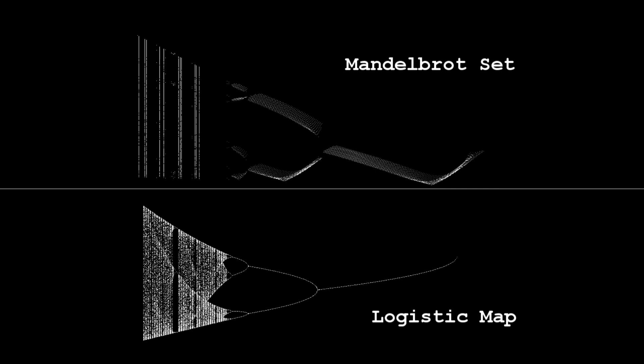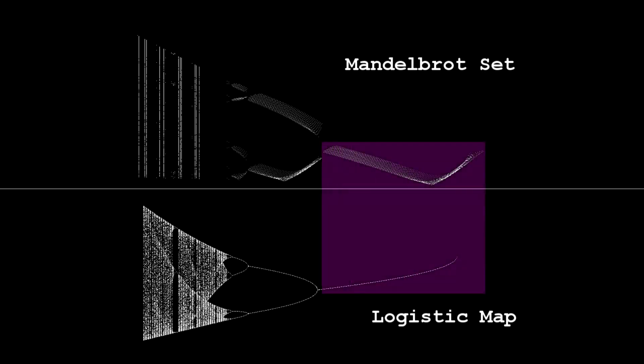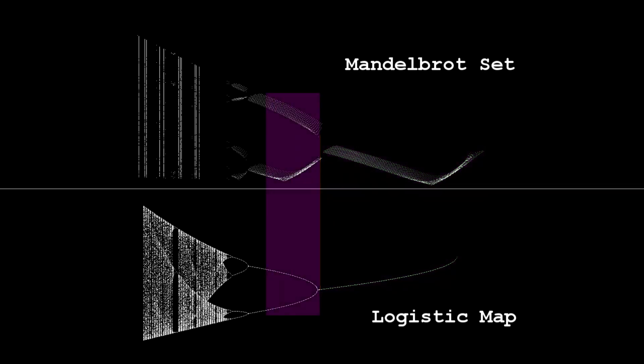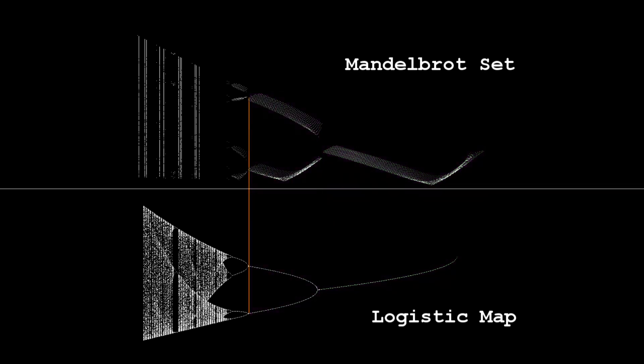Looking from right to left, we start with a single line on both diagrams, then we see a split into two branches, then another to four, and finally chaos.